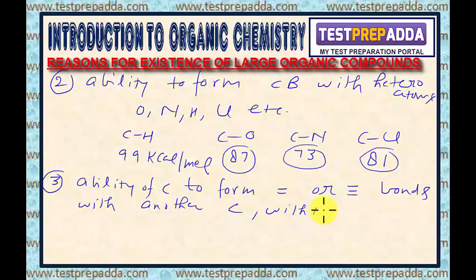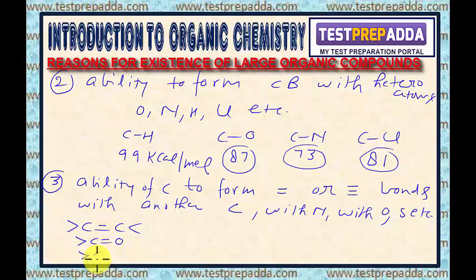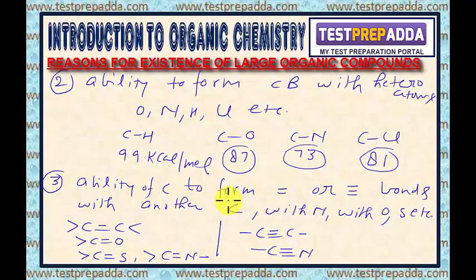Carbon can form bonds with nitrogen, oxygen, sulfur, etc. For example, C double bond C, and for triple bonds, C triple bond C, and C triple bond N. So carbon has the ability to form double or triple bonds with other carbon atoms, with nitrogen, with oxygen, etc. And this is the third reason for the existence of a large number of organic compounds.